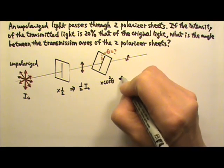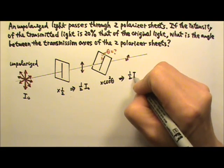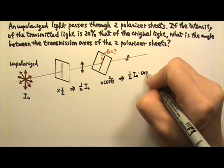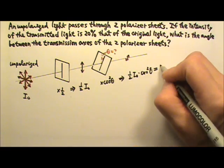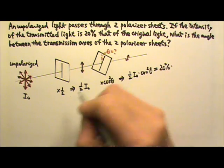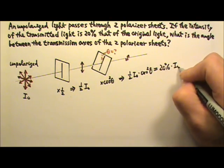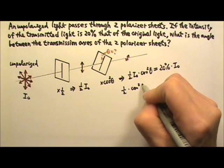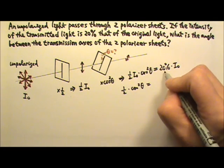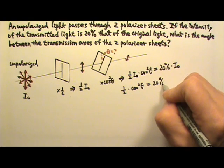And this will give us one half I0 times cosine squared theta, which is supposed to be 20% of the original intensity I0, which means one half times cosine squared theta equals to 20%, 0.2.